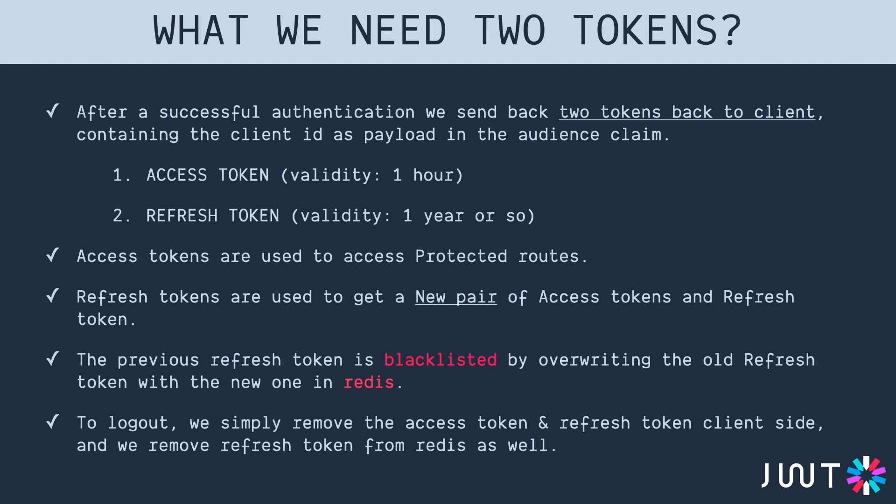After successful authentication, we send back two tokens to the client containing the client ID in the payload's audience claim. The access token has a validity of one hour, while the refresh token has a validity of one year or more. It is typical to keep refresh tokens valid for a long time because they are used to refresh access tokens. The access token is used to access protected routes, and the refresh token is used to get a new pair when the access token expires.